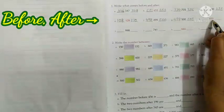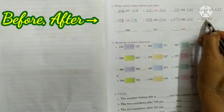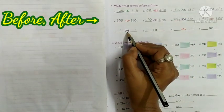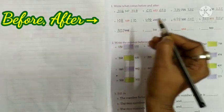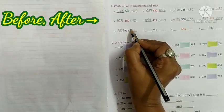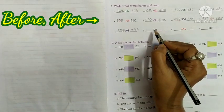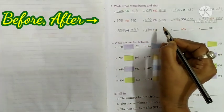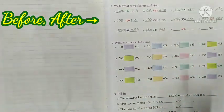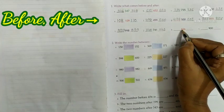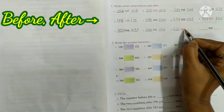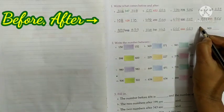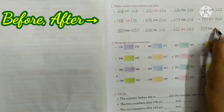Next, 855: before 855 is 854, after 855 is 856. Next, 998: before 998 is 997, after 998 is 999. Next, 741: before 741 is 740, after 741 is 742. Next, 666: before 666 is 665, after 666 is 667. Next, 900: before 900 is 899, after 900 is 901.